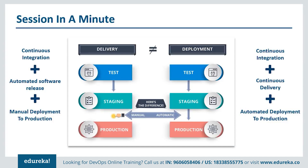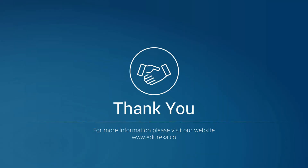Hopefully that distinguishes them for you: continuous delivery is a capability that you must have, and continuous deployment is an option you might choose based on the kind of product you have. In short, continuous delivery equals continuous integration plus automated release plus manual deployment to production; and continuous deployment equals continuous integration plus continuous delivery plus automated deployment to production. That's all for today's session. Thank you and have a great day.